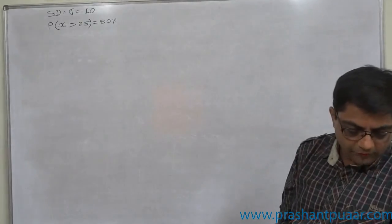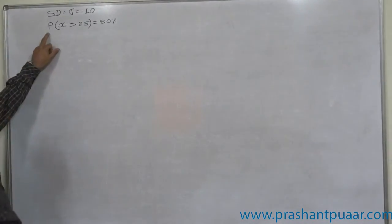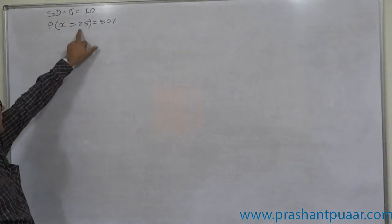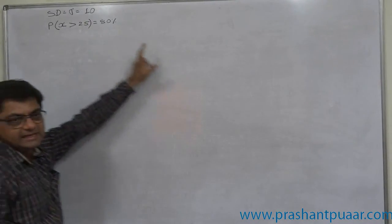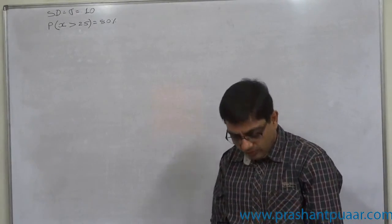80% of the values are greater than 25. That means probability of value greater than 25 is 80%. Favorable number of cases are 80% of total number of cases.